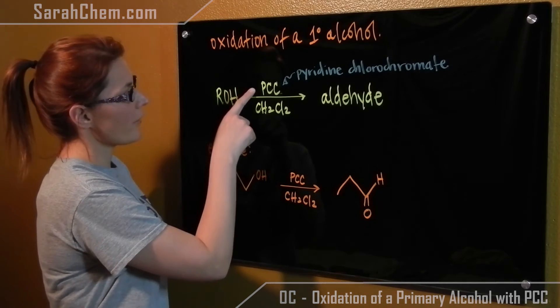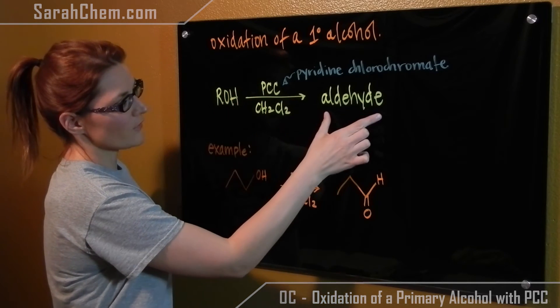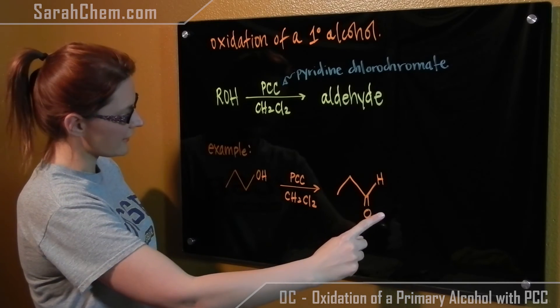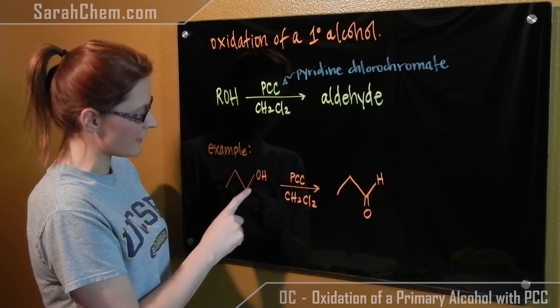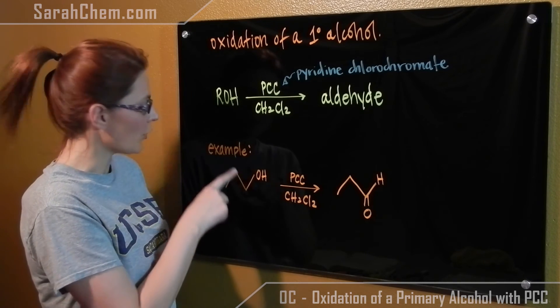So you have your alcohol, you have your PCC, and the formation of an aldehyde happening. So this is an example of a primary alcohol, primary because the OH group is attached to a carbon that's attached to only one other carbon.